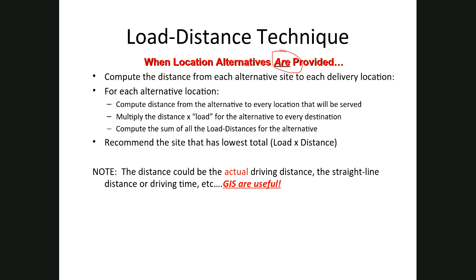The process we're going to use: first, compute the distance from each alternative to each delivery location. Then, for each alternative, compute the distance from that alternative to every location, and then multiply the distance times the load for that alternative, and add up all of those load distances. From among all the alternative locations, you want to recommend the site that has the lowest total load distance.